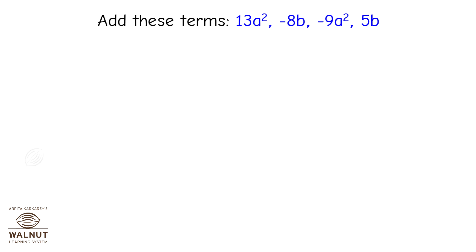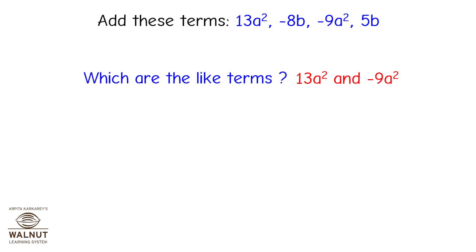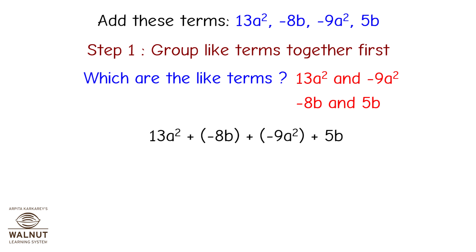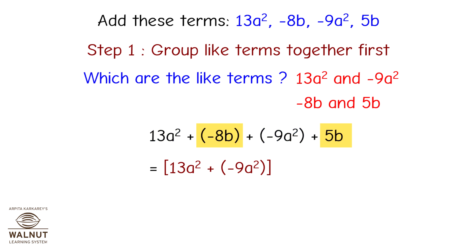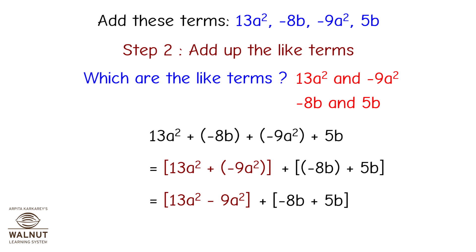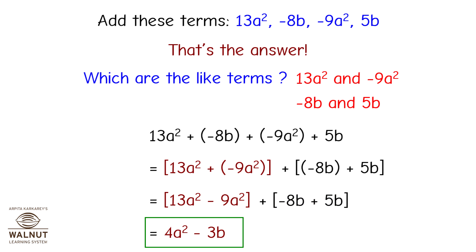Add 13a², -8ab, -9a², and 5b. The like terms are 13a² and -9a², and also -8b and 5b. Step 1: group like terms — (13a² - 9a²) + (-8b + 5b). Step 2: add the like terms, which equals 4a² - 3b. That's the answer.